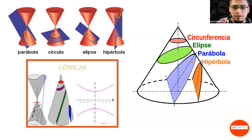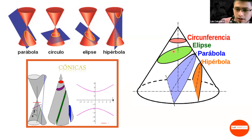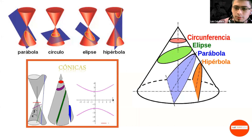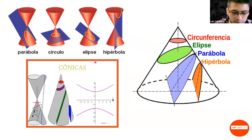Resumiendo: la parábola es un corte paralelo al lado lateral del cono; la elipse es un corte oblicuo sin dirección específica, parecida a una circunferencia pero aplastada en un lado y alargada en el otro; la circunferencia es un corte horizontal siguiendo la base; y la hipérbola es un corte totalmente vertical paralelo al eje central. Son todas figuras curvas, muy bonitas, geométricas y simétricas.